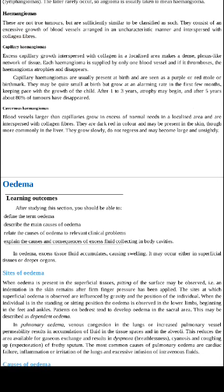Capillary hemangiomas involve excess capillary growth interspersed with collagen fibers in a localized area, forming a dense plexus-like network of tissue. Each hemangioma is supplied by only one blood vessel. If it becomes thrombosed — meaning a blood clot forms — the blood supply is reduced and eventually completely diminished, leading to atrophy and disappearance of the hemangioma.